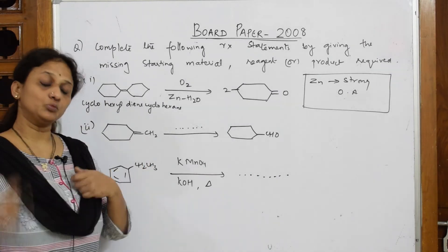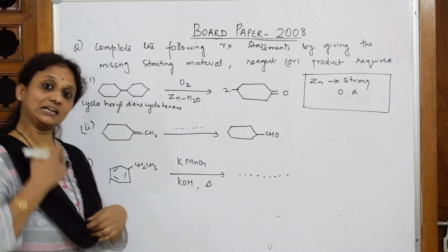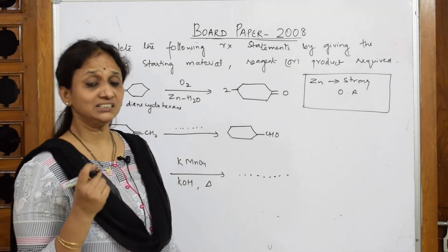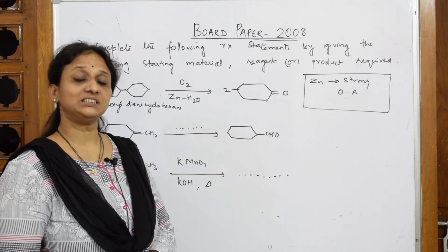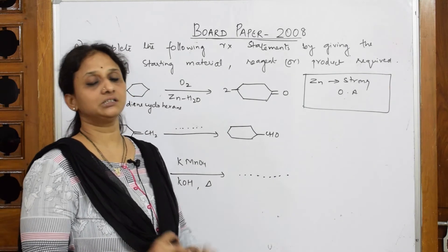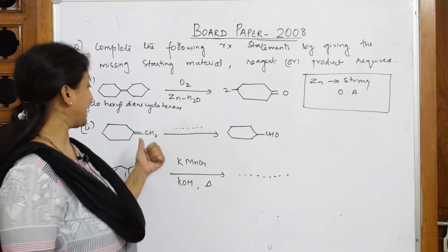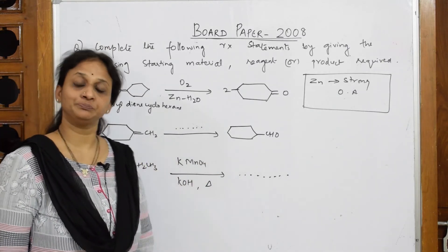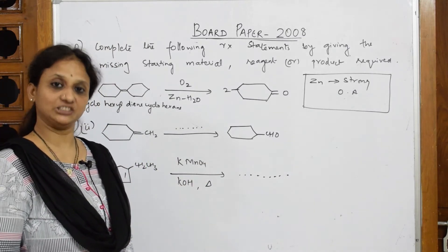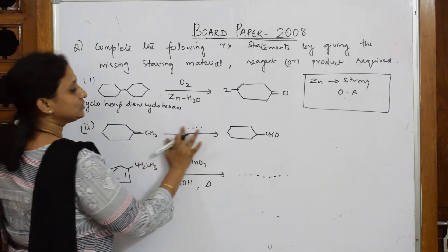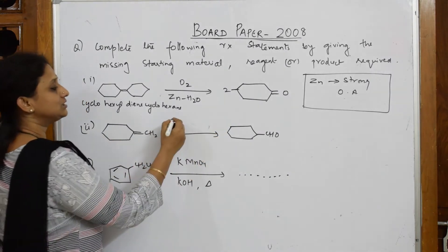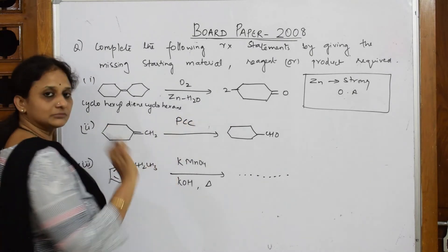Now I have one more here. You would have remembered when I did the aldehyde chapter, I did a reaction with PCC. I said PCC (pyridinium chlorochromate) is the only reagent which converts your alkenes to aldehydes. There's also one more thing - BH3 also converts. So when you see such alkenes to aldehydes, you can directly write the reagent: PCC is the best answer.